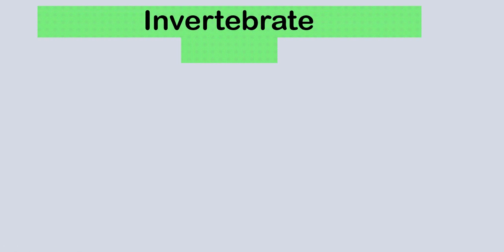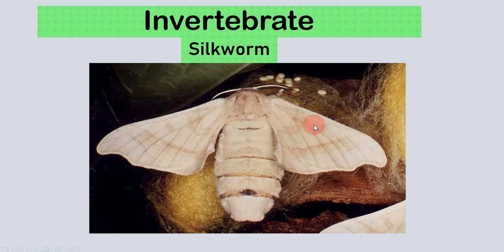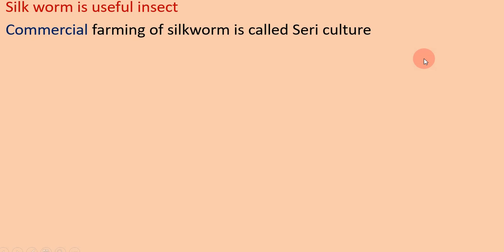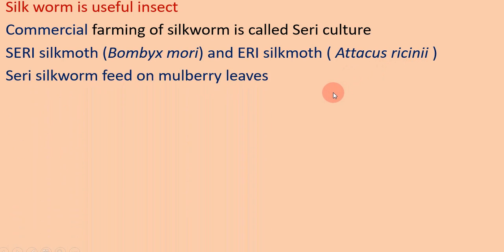The unit is Invertebrates, and the topic we are going to see is Silkworm. Silkworm is a useful insect. Commercial farming of silkworm is called sericulture. Seri silk moth and eri silk moth are two examples of silk moths used in sericulture in Nepal. The scientific name of seri silk moth is Bombyx mori and eri silk moth is Attacus ricini. Seri silk moth feeds on mulberry leaves, whereas eri silk moth feeds on castor leaves.